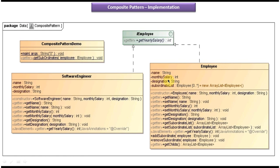The Employee class has name, monthly salary, and designation fields. Designation can be CEO, QA team lead, development team lead, development manager, etc. It also has a subordinate list to maintain who is working under a particular employee. SoftwareEngineer is a leaf node so it does not have methods to add or remove subordinates or get children — it cannot have other objects under it.